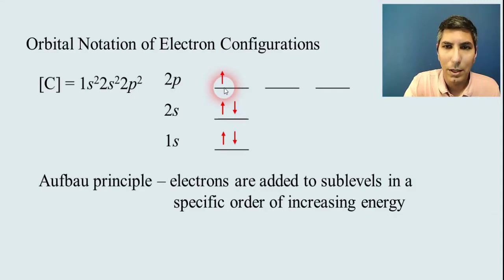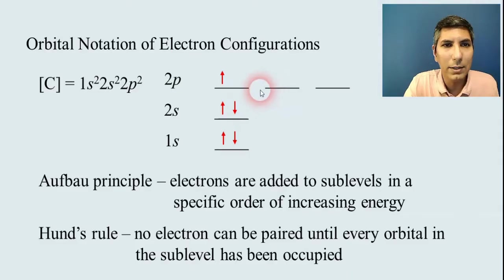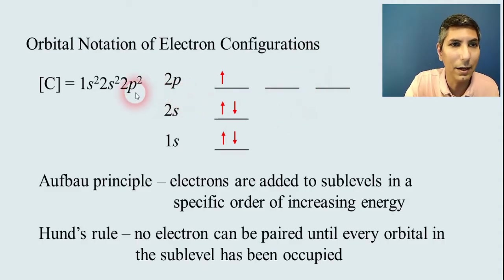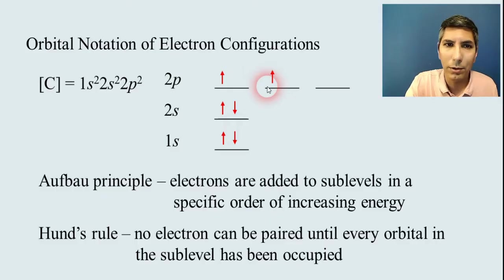And then we have 2p². The first one goes right there. Now where would the second one go? You might think right next to it, but actually it doesn't. There's a rule called Hund's rule, and Hund's rule says that no electron can be paired until every orbital in that section or that sublevel has one electron in it. So that means that you can't double up until every one of these lines has an arrow on it. So that means that our second electron will actually have to go right here.